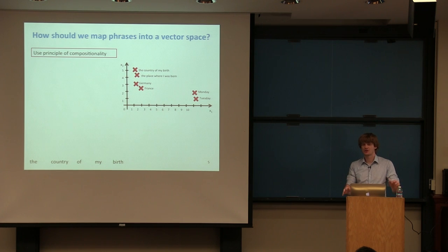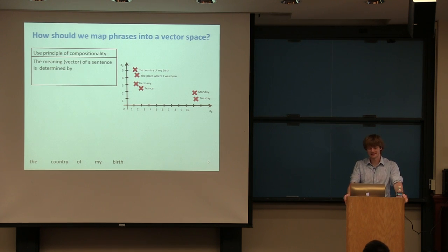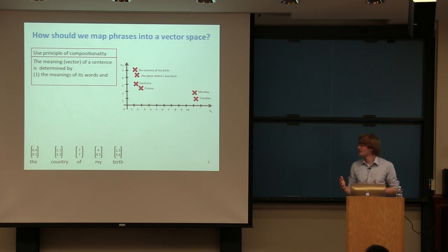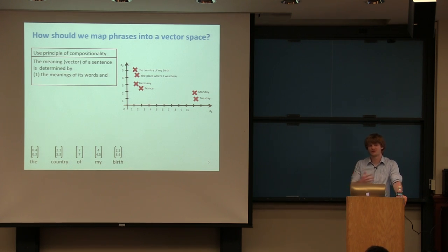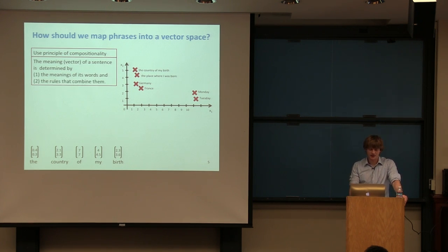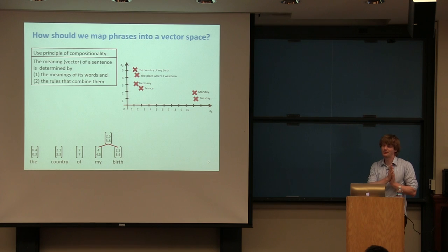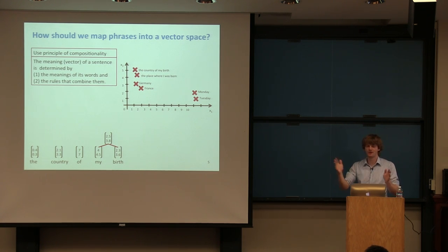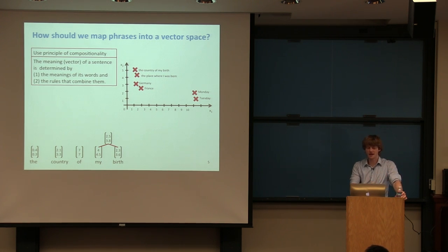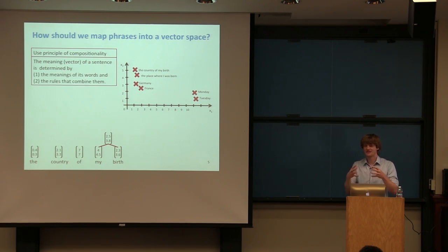We'll introduce the principle of compositionality, which states that the meaning vector of a sentence is determined by two things: the meaning of its words — the word vectors — and the rules used to combine them. Unlike recurrent networks that combine words from left to right and compute one vector for everything read so far, this time we'll adhere to the grammatical structure of the sentence and find specific noun phrases that go together.